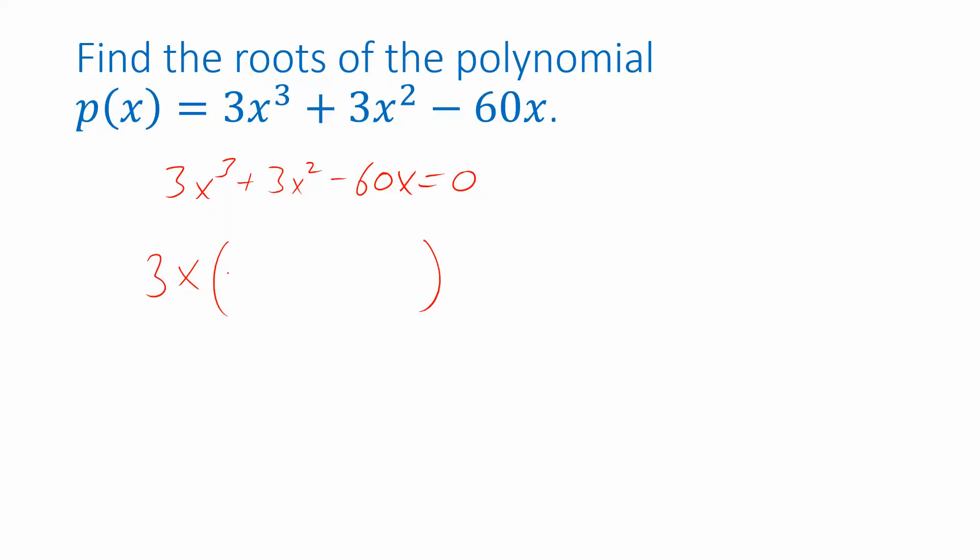So I pulled out the 3, that's gone. From x cubed, I pulled out an x, that leaves x squared. And then on the second term from 3x squared, I pulled out 3x, that leaves just x. And then on the last term, I pulled the x out. And then negative 60, I pull out the 3, it leaves negative 20.